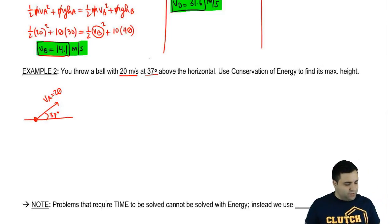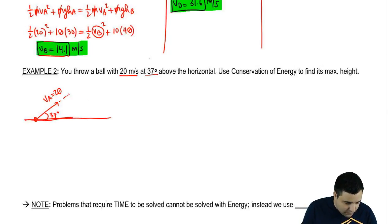And it says use the conservation of energy to find its maximum height. So let me draw this. It's going to go like this, and then hit the ground. I'm going to call this point A, B, and C. And here I want to know the maximum height.